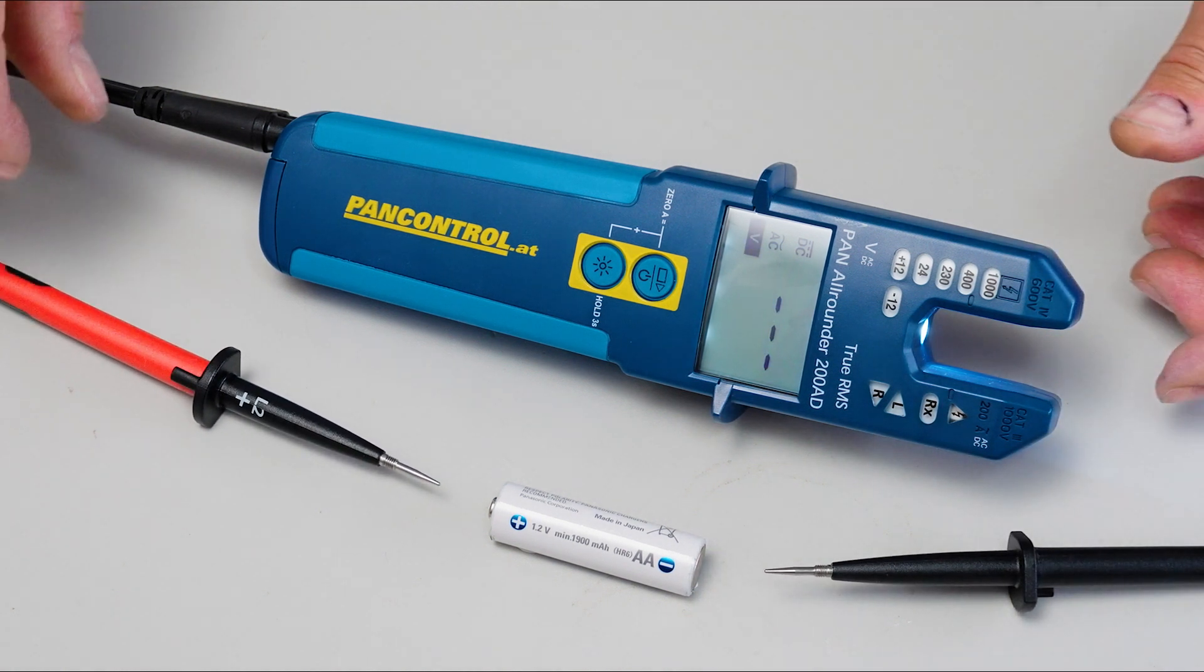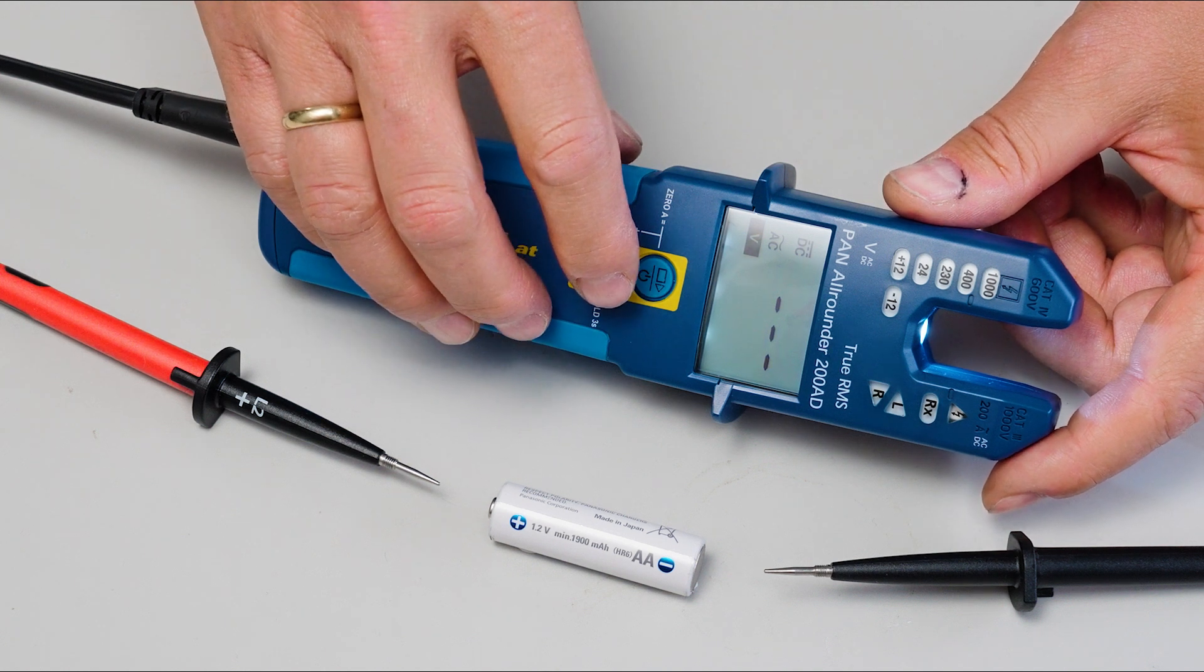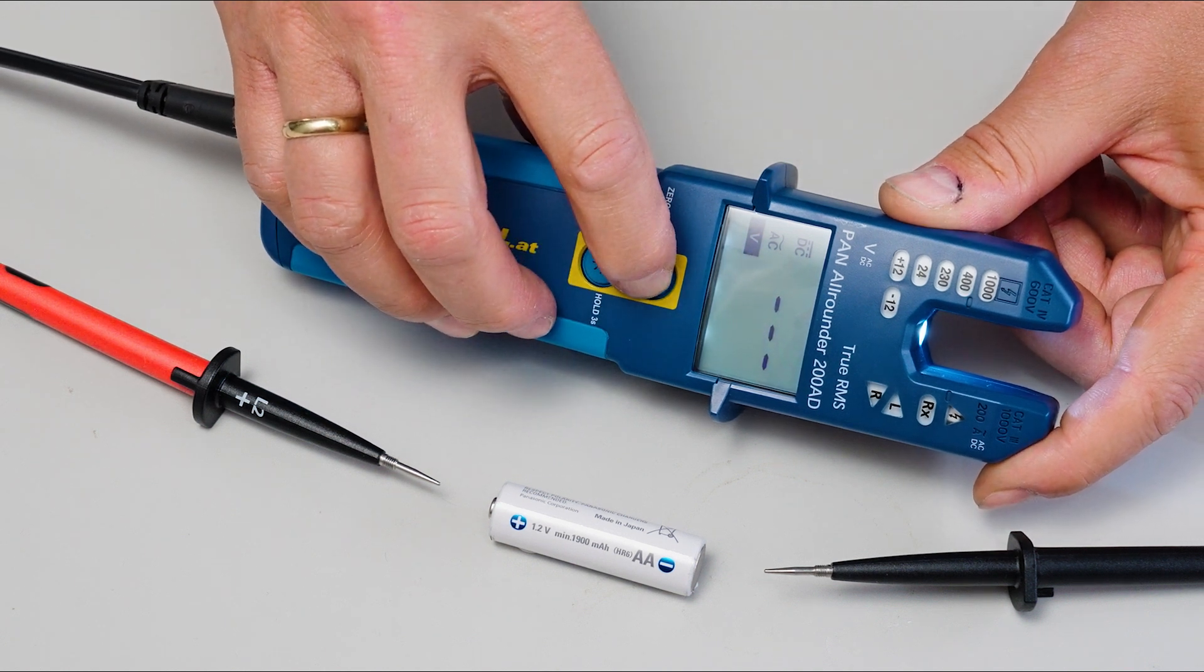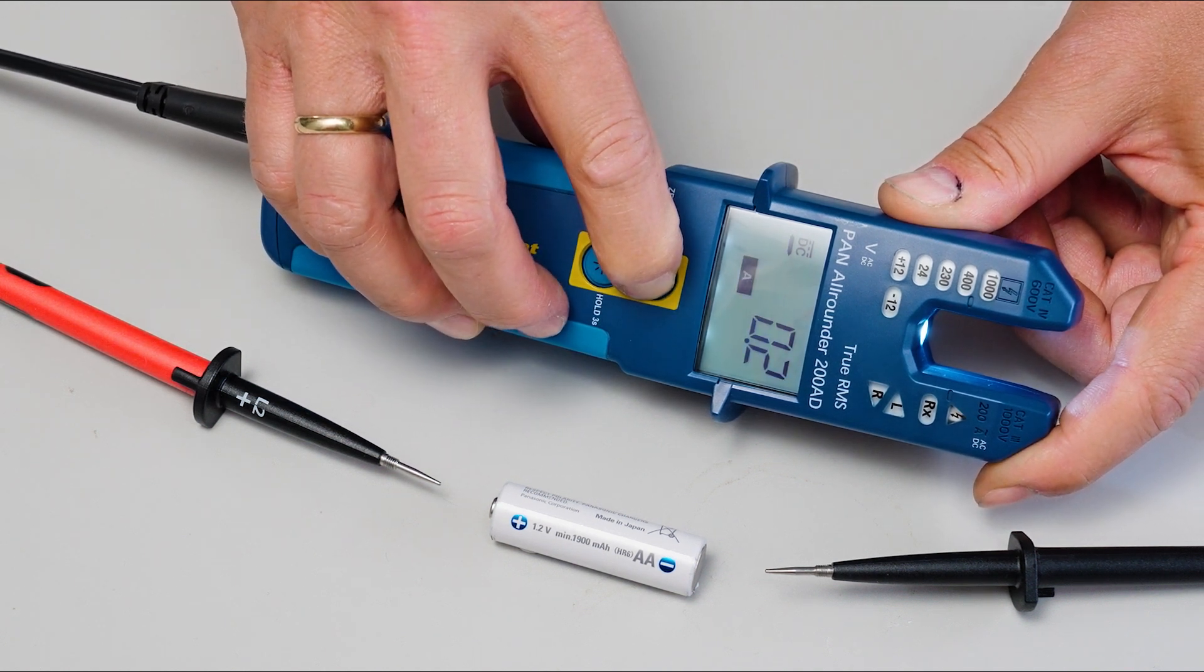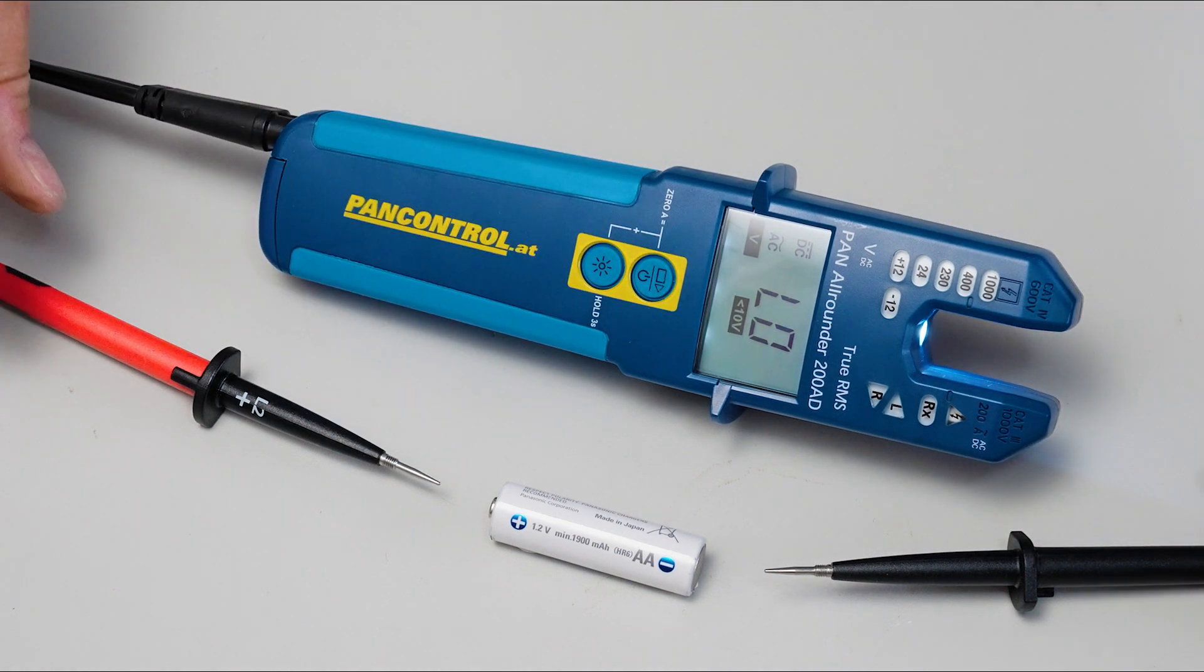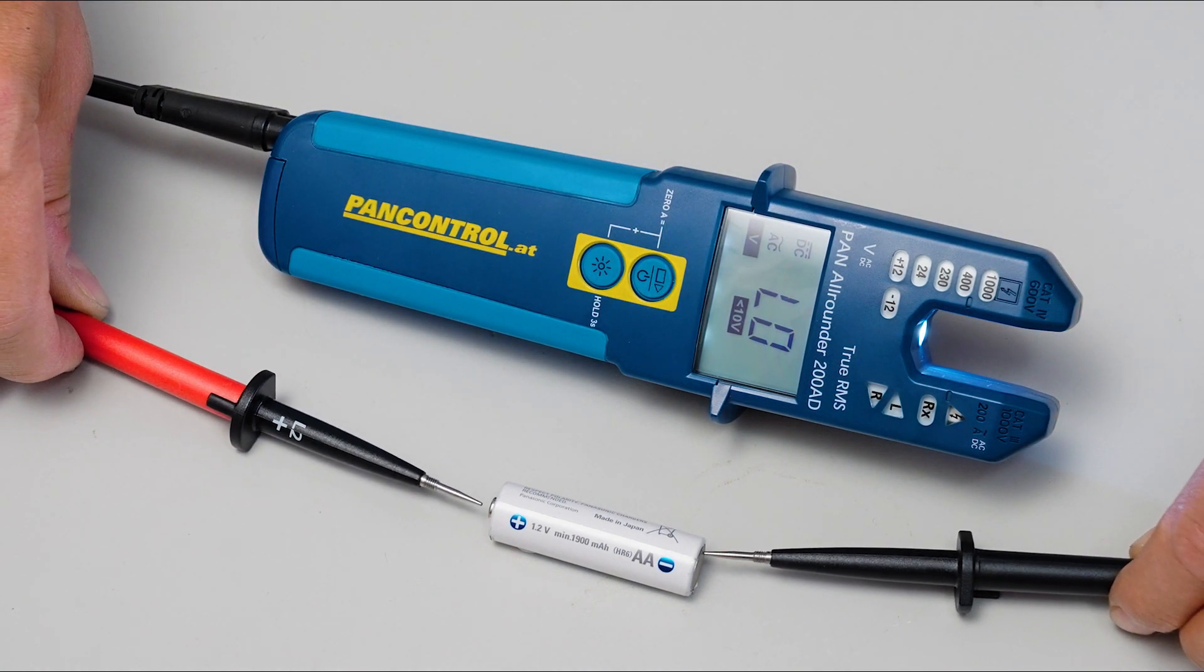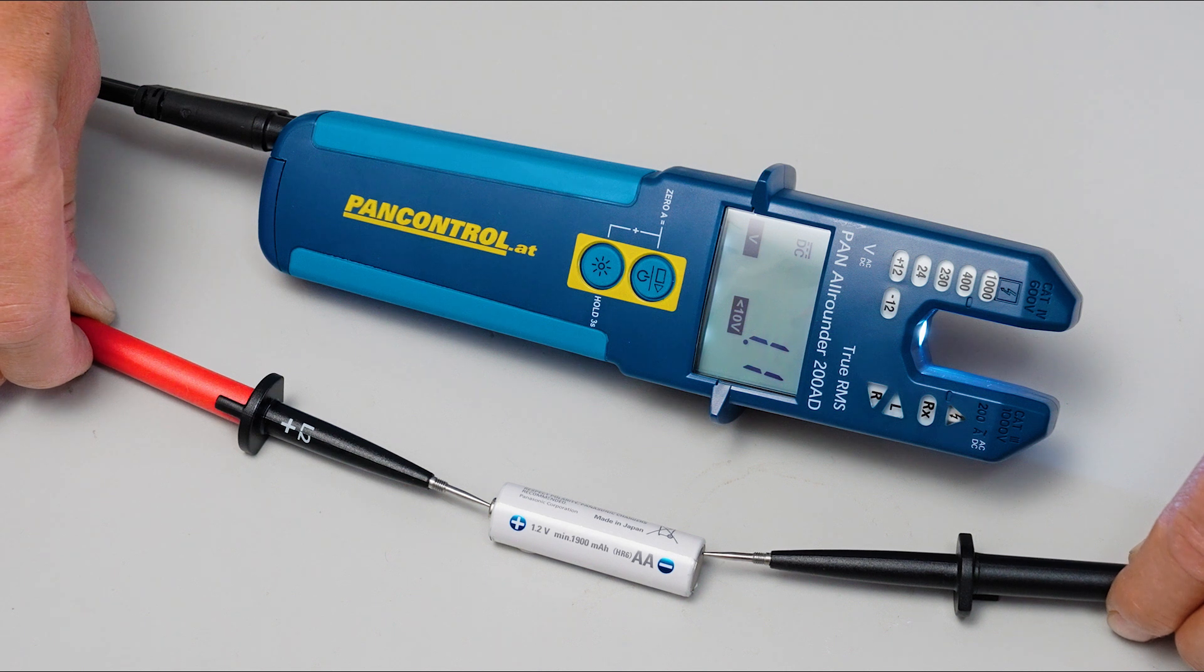In order to measure small voltages, double pressing the operating button activates the low voltage mode. Now the voltage of the rechargeable battery of 1.1V can be measured.